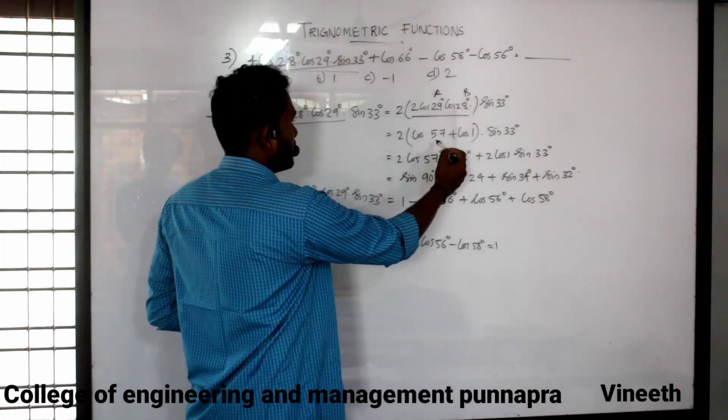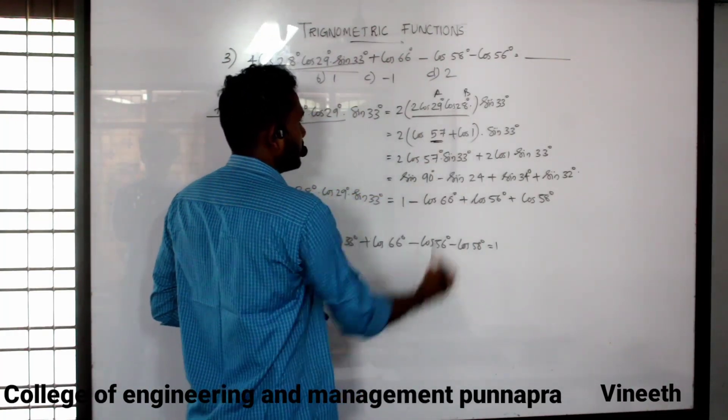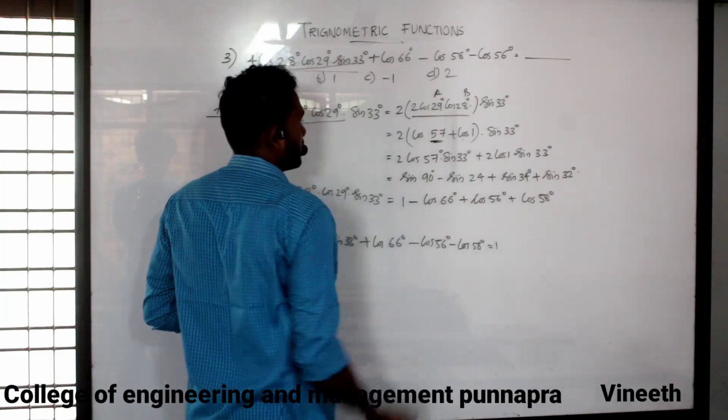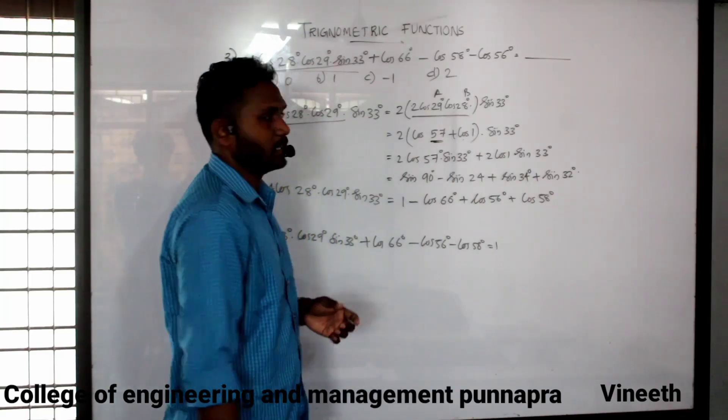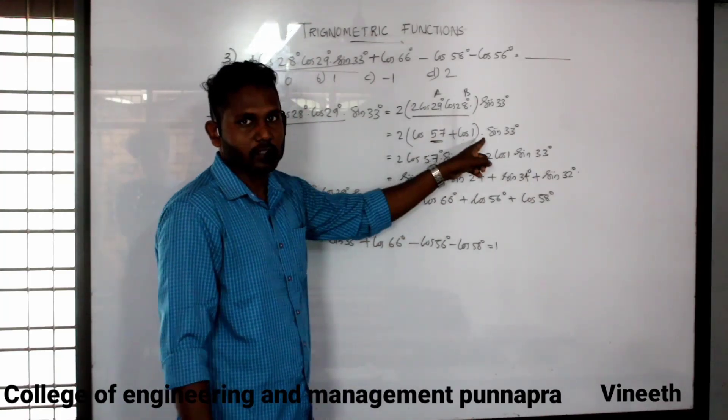Cos 29 plus 28 is cos 57 degree plus cos 29 minus 28 is cos 1 degree.